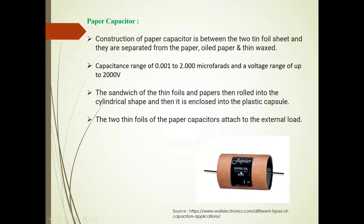Second is the paper capacitor. This image is of a paper capacitor. The construction of this paper capacitor consists of two thin foil sheets separated by paper, oiled paper, or thin waxed paper. Capacitance range is 0.001 to 2 microfarad and voltage range is up to 2000 volts. The sandwich of thin foils and papers is then rolled into a cylindrical shape and enclosed in a plastic capsule. The two thin foils of the paper capacitor are attached to external leads.